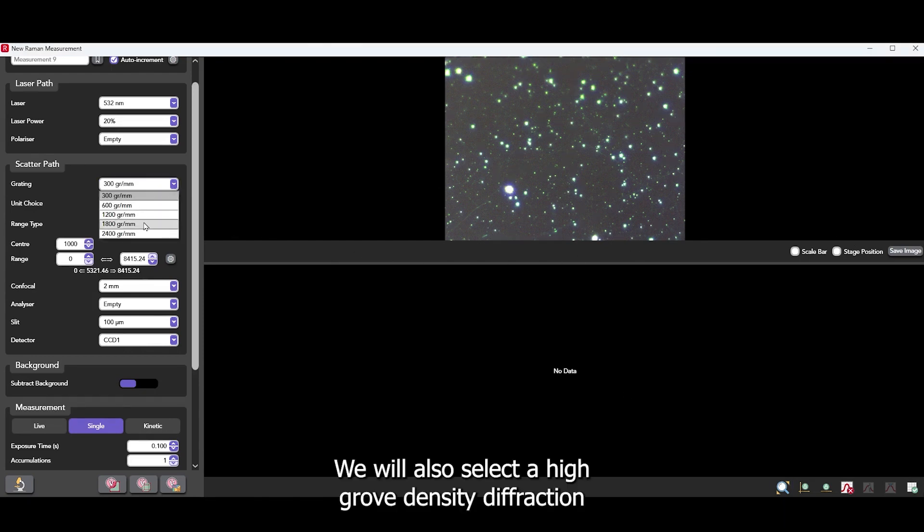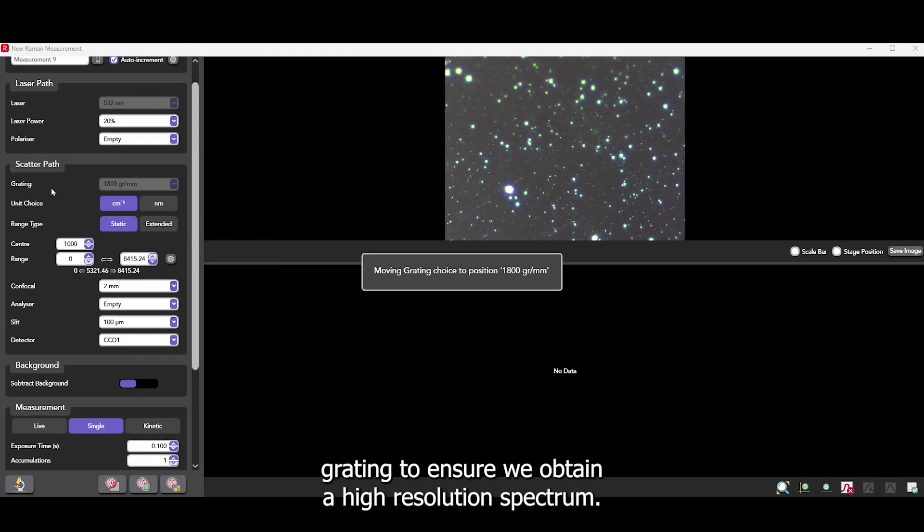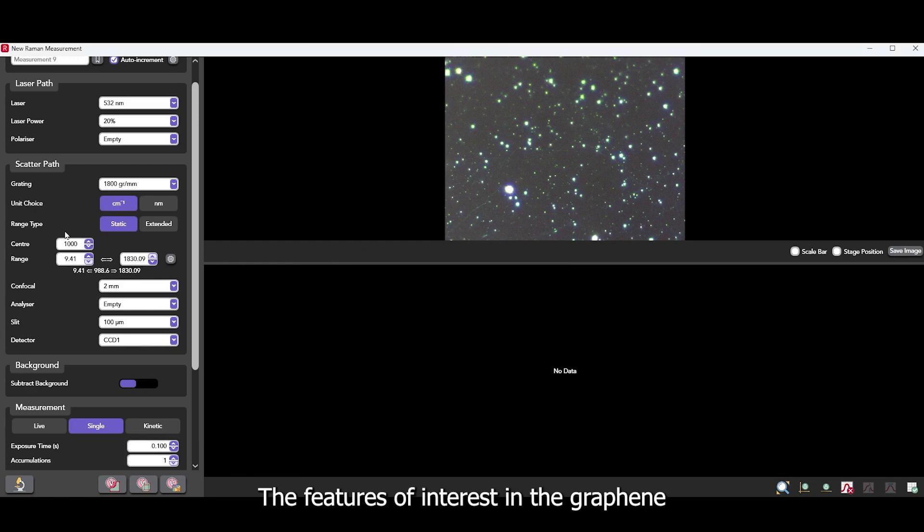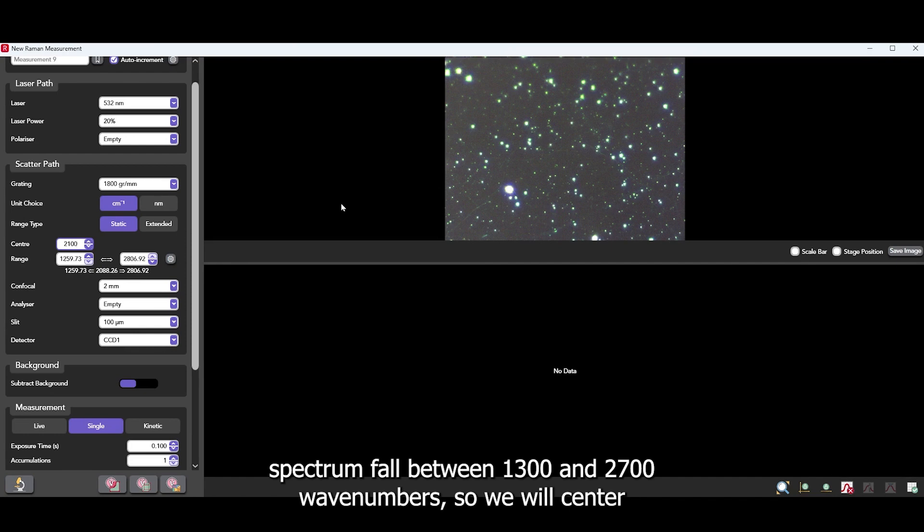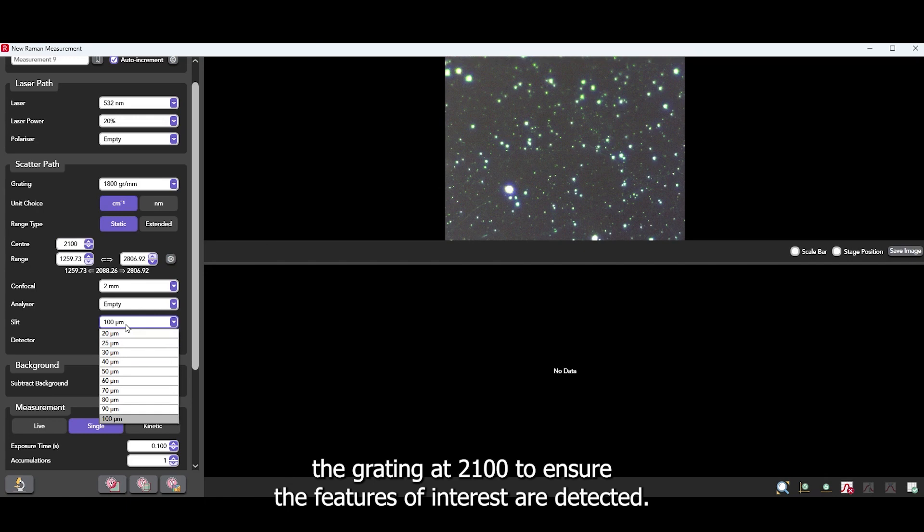We will also select a high groove density diffraction grating to ensure we obtain a high resolution spectrum. The features of interest in the graphene spectrum fall between 1300 and 2700 wave numbers so we will center the grating at 2100 to ensure the features of interest are detected.